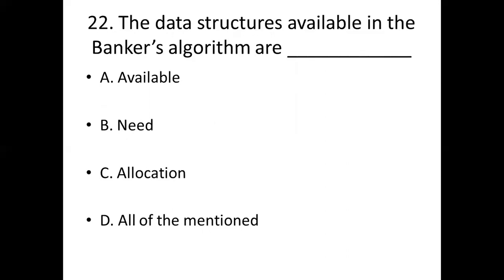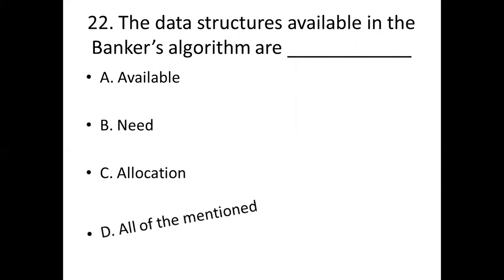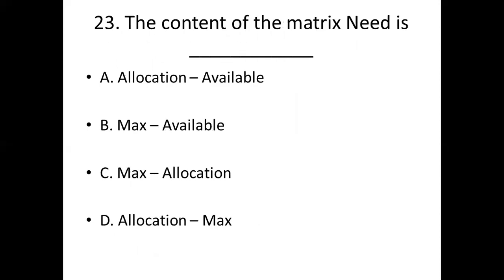Twenty-second bit. The data structures available in the Banker's algorithm are dash. Option A: Available. Option B: Need. Option C: Allocation. Option D: All of the mentioned. Answer: Option D, All of the mentioned.